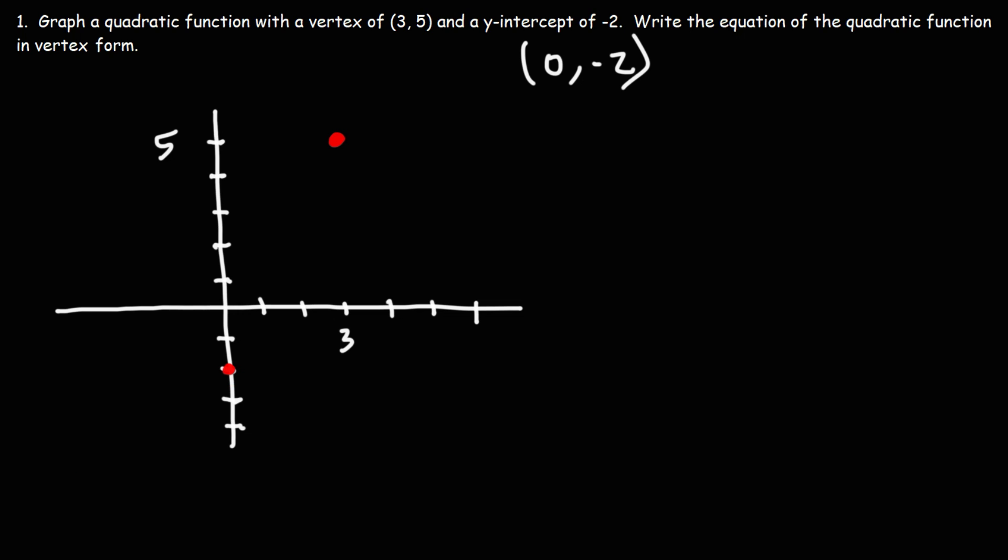So how can we draw a parabola or a quadratic function with these two points? The key is to focus on the axis of symmetry. The axis of symmetry is basically the x-coordinate of the vertex. So it's x equals 3. So we're going to draw a vertical dashed line at x equals 3.